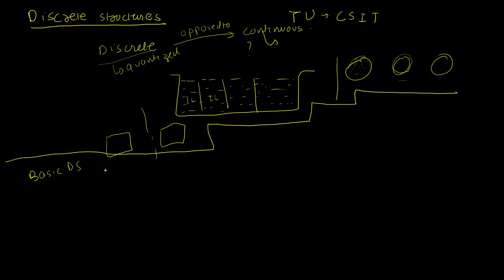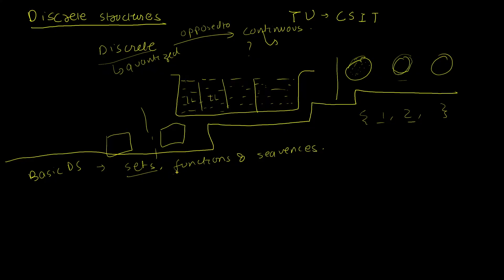We start with the basic discrete structures, which will include sets, functions, and sequences. We'll go into these topics in detail in later videos. I want you to observe that all of these are discrete structures. A set is discrete because its elements occur discretely. Functions — we're only talking about discrete functions in this subject. Sequences are discrete by nature, because each item in a sequence is its own independent entity, distinct from others.